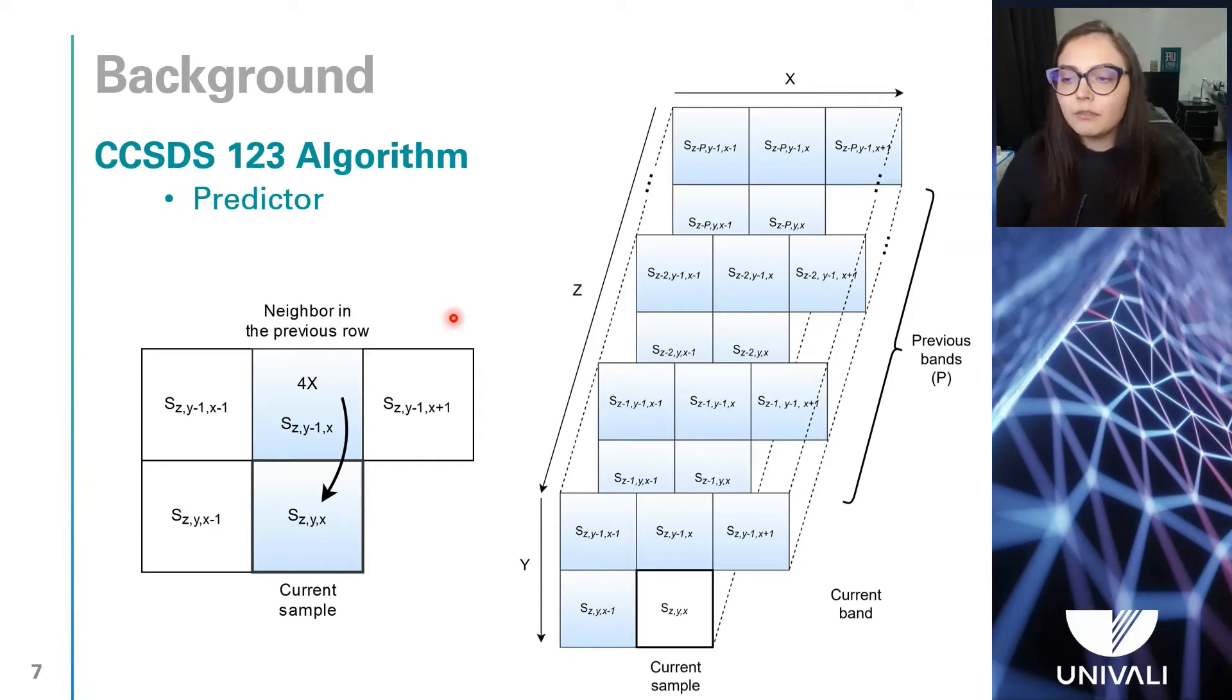and it means that the value of the local sum will be equal to 4 times the neighboring sample value in the previous row, as it is represented in this image.